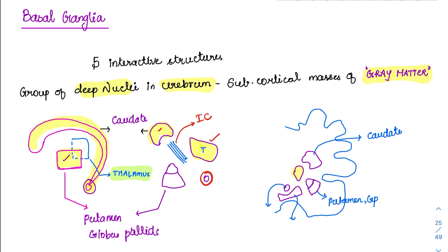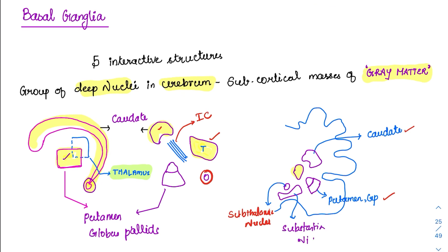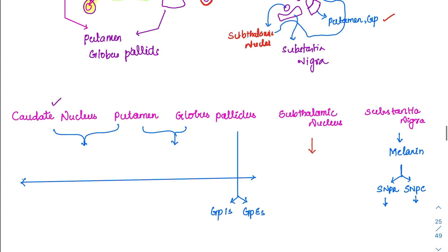In a vertical section, we can see two more nuclei in addition to caudate, globus pallidus, and putamen. The fourth one is the subthalamic nucleus. The fifth one — very important from the MCQ and clinical perspective — is the substantia nigra. So these are the five interactive structures, all involved in motor movements; whenever there is a defect, we will present with motor disorders.